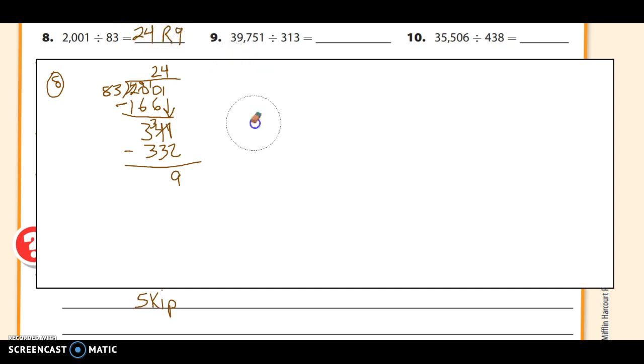Alright, let's check out number 9. 39,751 divided by 313. 313 goes into 397 once. 313 goes here, and I subtract, and I've got 7 minus 3 is 4, and 9 minus 1 is 8. Bring down this 5. How many times is 313 going to 845? It's only twice. I know it's not 3, because if I did 3 times 300, it'd be 900, that'd be too much. So it's going to be just twice.